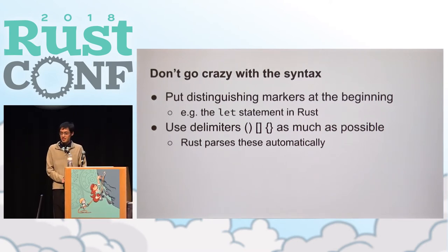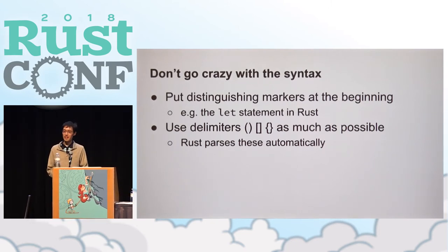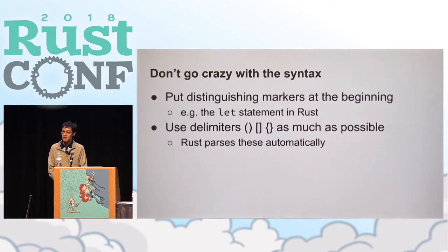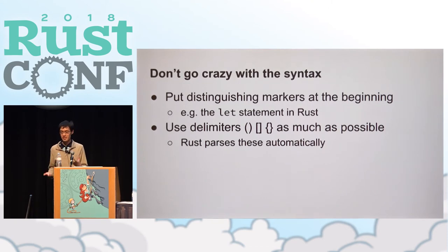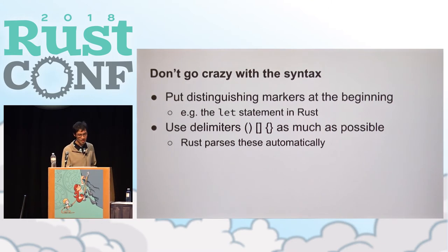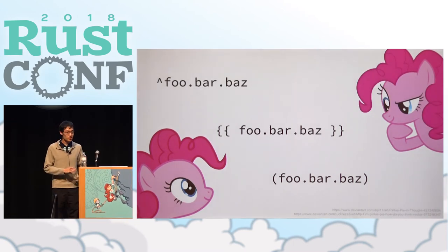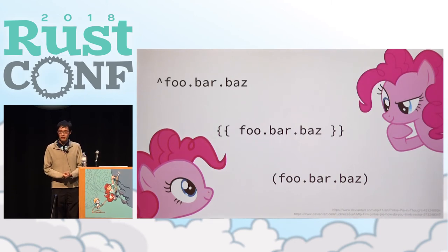Use delimiters — parentheses, square brackets, and braces — as much as possible. One of the few things the macro API gives you is that it groups these delimiters automatically. So if you build your syntax around these particular delimiters, not only will it look more consistent with the rest of Rust, it'll also make your job much easier because you don't have to match these up yourself. One example of where these two principles apply is in the syntax for substituting dynamic content.